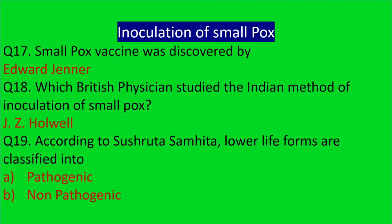Inoculation of smallpox — smallpox vaccine was discovered by which scientist? That is Edward Jenner. Next: which British physician studied the Indian method of inoculation of smallpox? The answer is J.Z. Holwell.